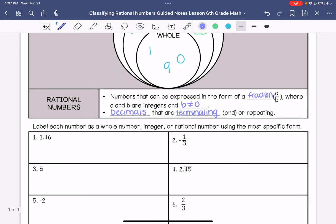We are going to label each number as a whole number, integer, or rational number using the most specific term. So number 1, 1.46, that is a rational number. Sorry, you're probably going to hear my dogs fighting in the background. Number 2 is negative 1/3, that is a rational number.